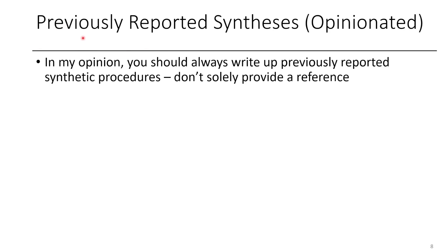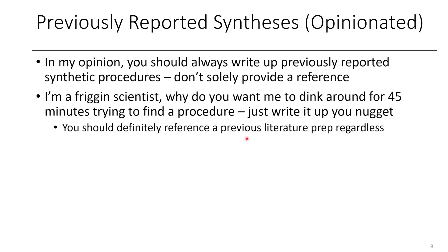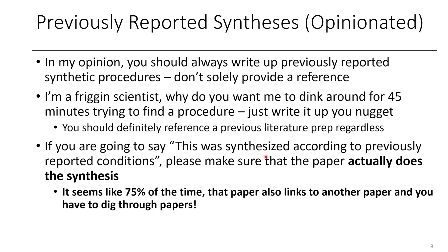If you're reporting a method that was previously reported, you should always write up that experiment. Just do it because it saves new researchers a lot of time when they're going to reproduce your chemistry. Quite often I'll click on a reference, go find that reference, then have to go to another reference, and it's not in that one either — so I have to go to SciFinder and dink around for 45 minutes just trying to find a procedure. You clearly found it and reproduced it at one point, so just write it up. At the bare minimum, you should reference a previously reported procedure, and make sure your reference actually links to a correct prep with conditions.